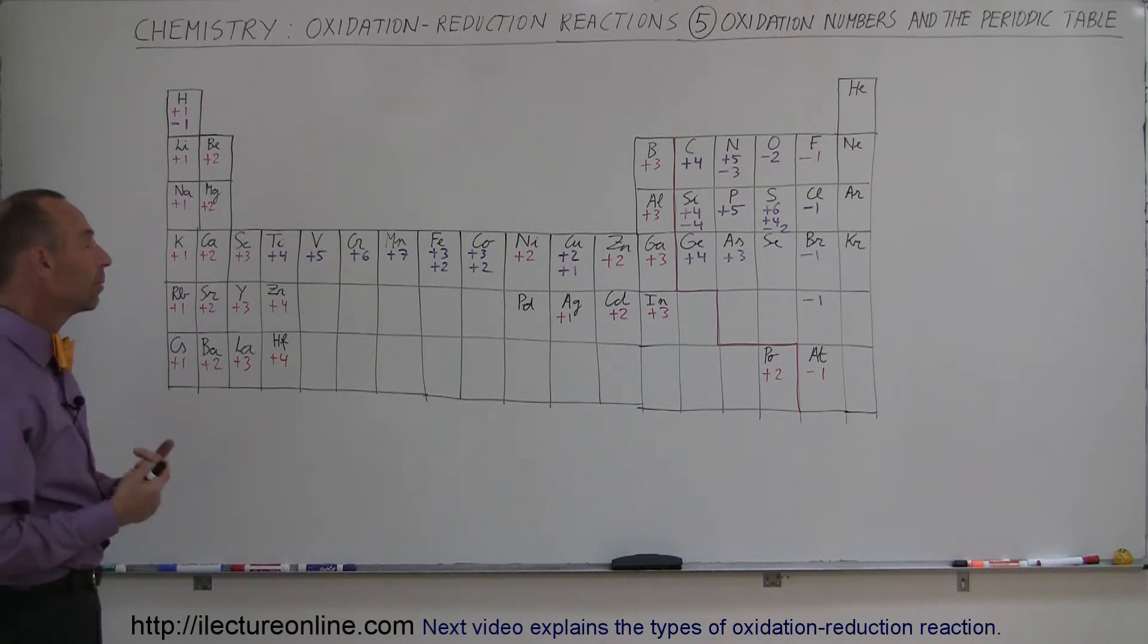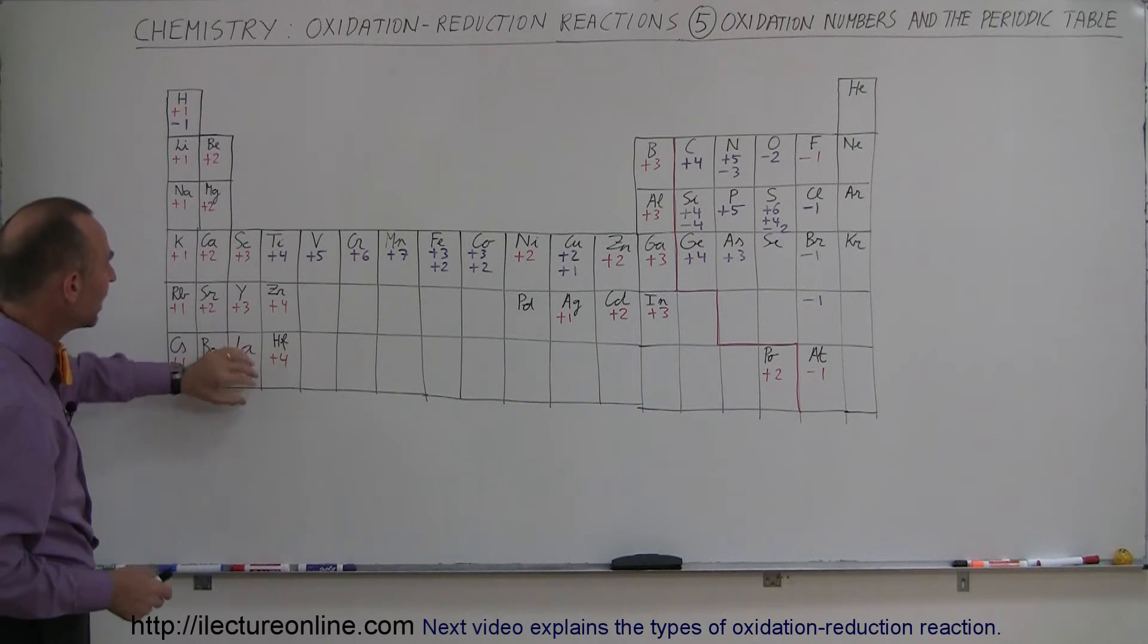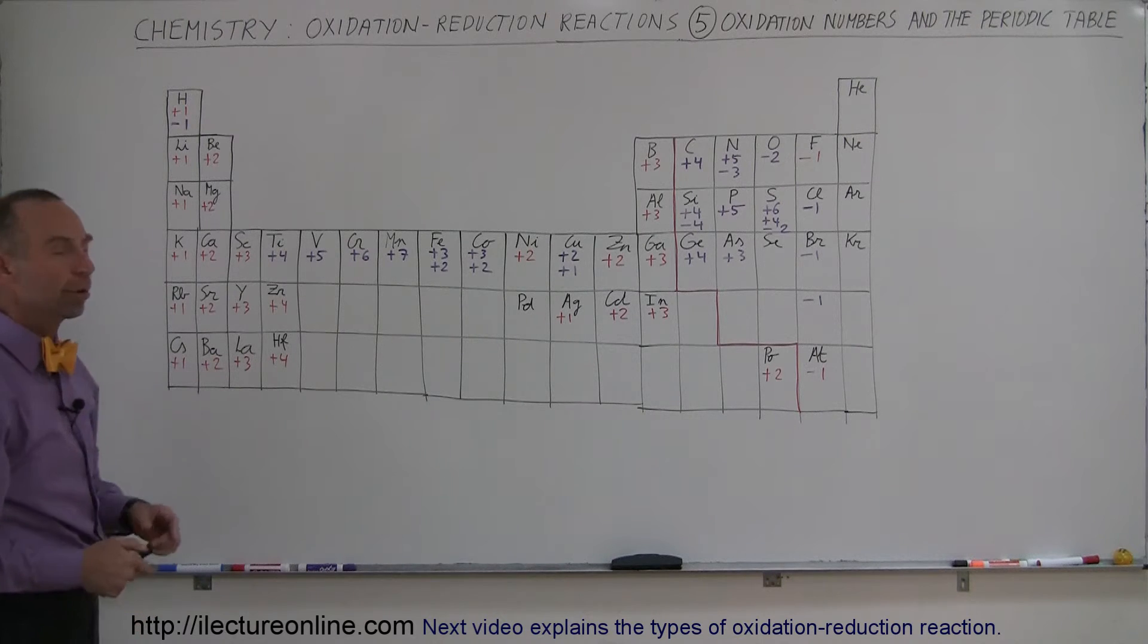So whenever they bind with other elements, you can see that the oxidation state is plus one, plus two, plus three. And on the fourth column, very likely it will be plus four.